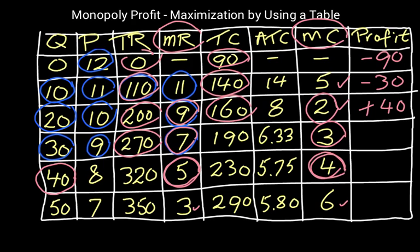At quantity 30, we have 270 minus 190, total revenue minus total cost, and that's plus 80.